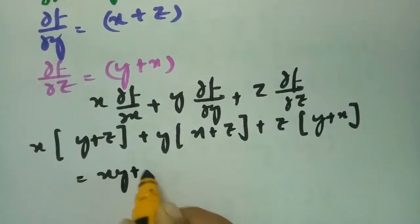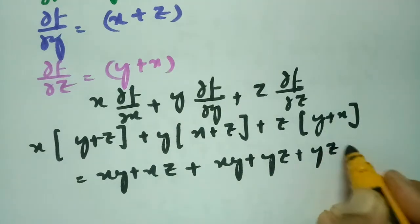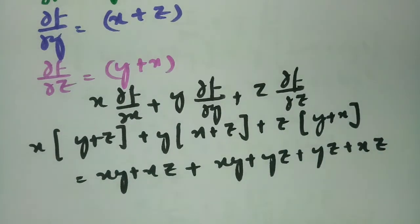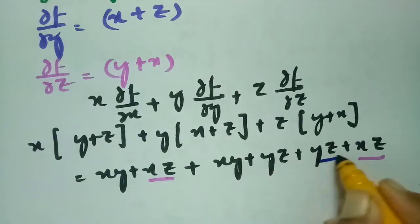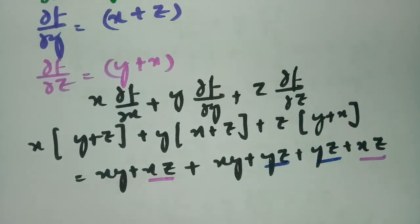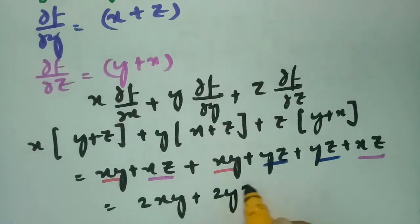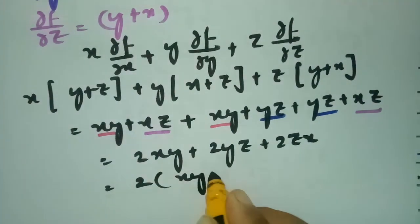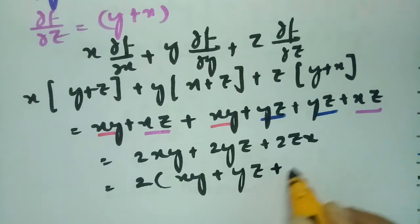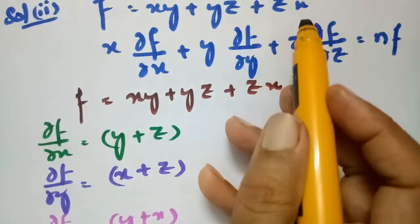Multiplying out: x(y+z) gives xy plus xz; y(x+z) gives xy plus yz; z(y+x) gives yz plus xz. Adding all like terms: 2xy plus 2yz plus 2xz. Taking 2 common gives 2(xy plus yz plus zx). Since xy plus yz plus zx is nothing but f, this equals 2f.